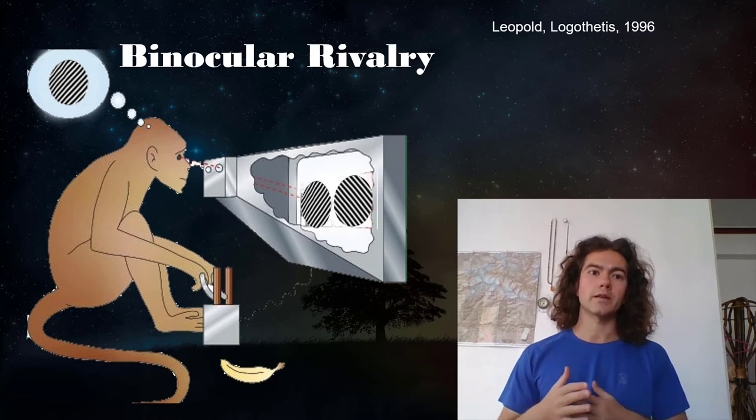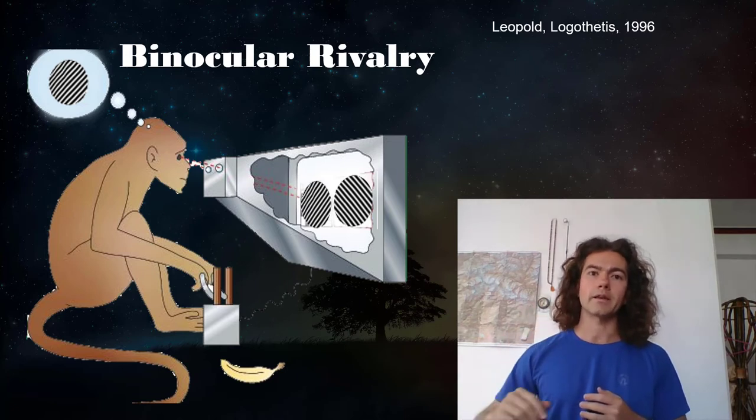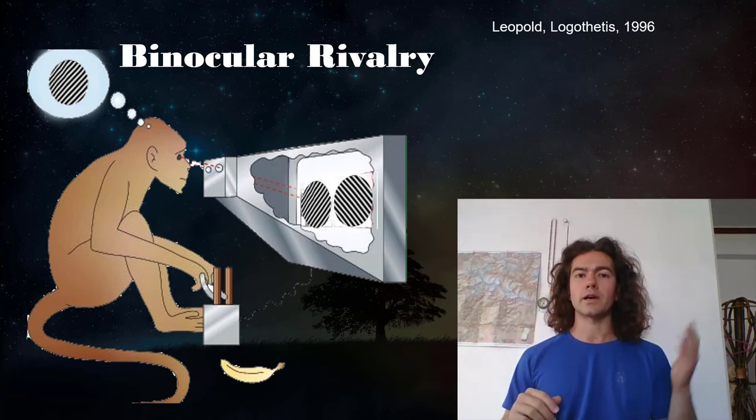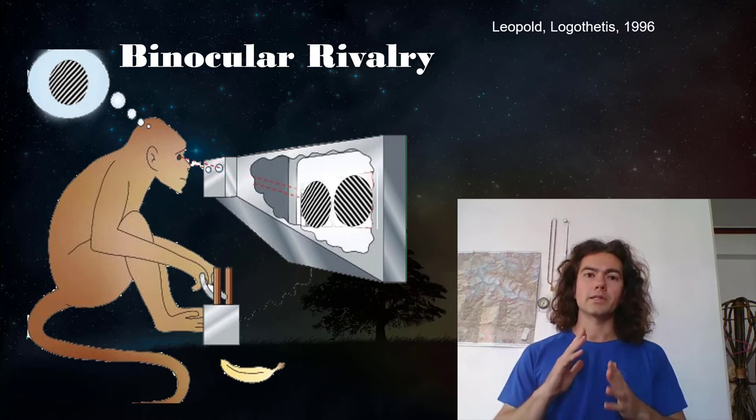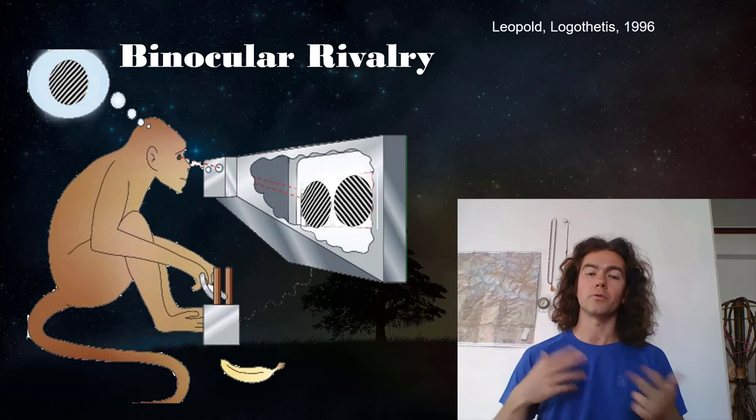So what we can assume then is that at some points in time, the monkey is going to see that grating that goes up and to the right. And then at other times, the monkey is going to see that grating that goes up and to the left. And the monkey's perceptual experience will alternate between those two things.